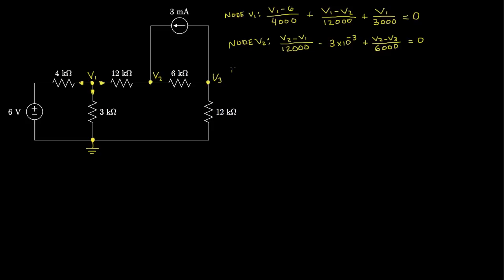Finally, at the node labeled V3, we have (V3 minus V2) / 6,000 as a current flowing out. Then the 3 milliamps flows out in this direction, so we add 3 times 10 to the minus third. And the last current is (V3 minus 0) / 12,000. That's all equal to zero.